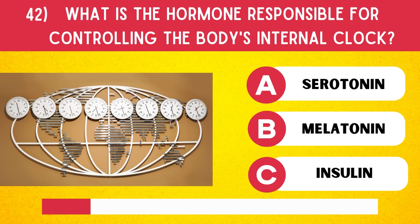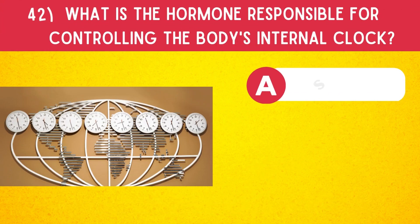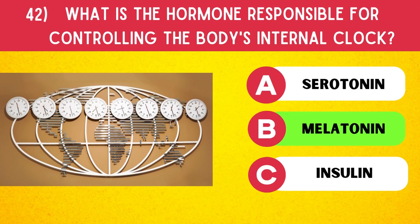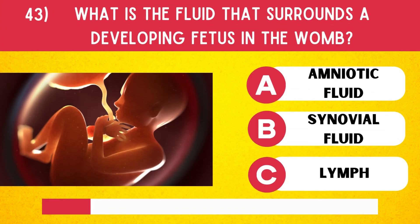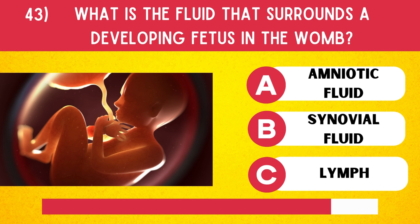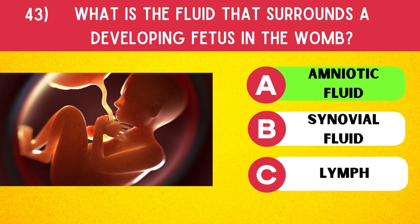What is the hormone responsible for controlling the body's internal clock? Melatonin. What is the fluid that surrounds a developing fetus in the womb? Amniotic fluid.